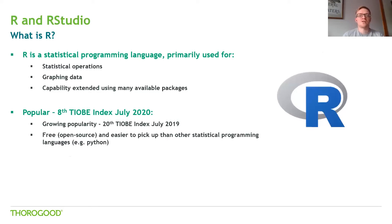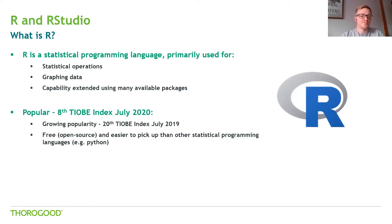As you can see, R was 20th in the TIOBE index this time last year, and it's really grown in the past year. That's not just initial growth — that's a resurgence. Traditionally it was R versus Python in the open-source statistical programming languages battle and Python seemed to be taking over, but there's such a drive for advanced analytics now that both have just shot up the list. Python is still ahead in the index, but R is catching it in ranking. R is free and open source, and it's generally seen as slightly easier to pick up than Python.